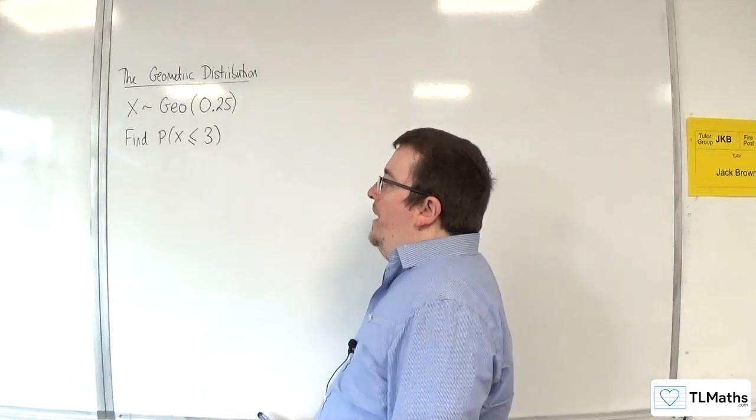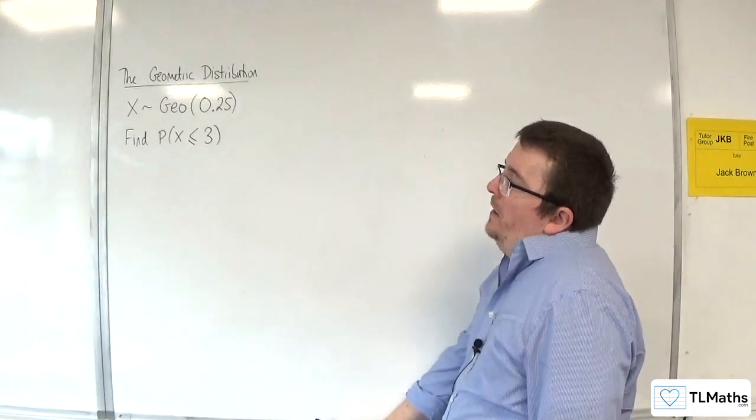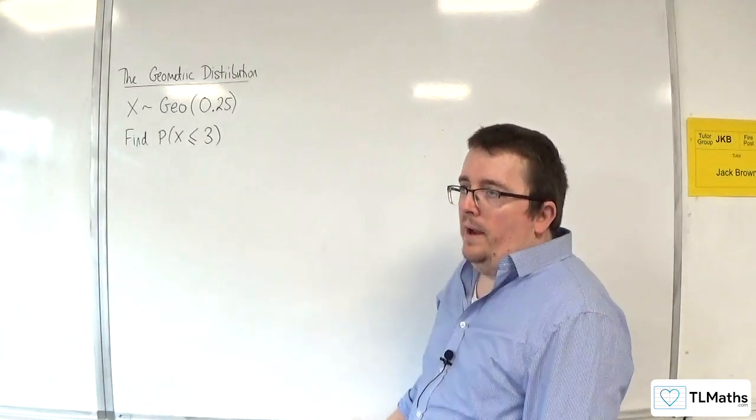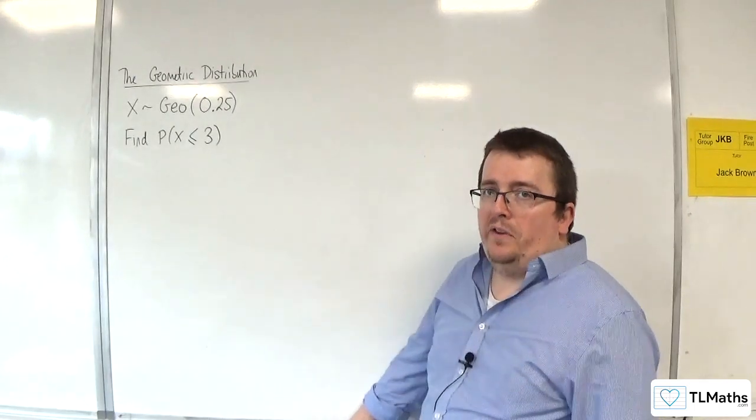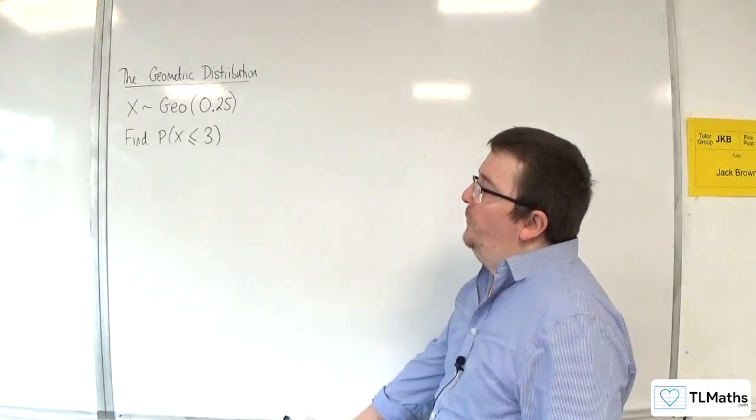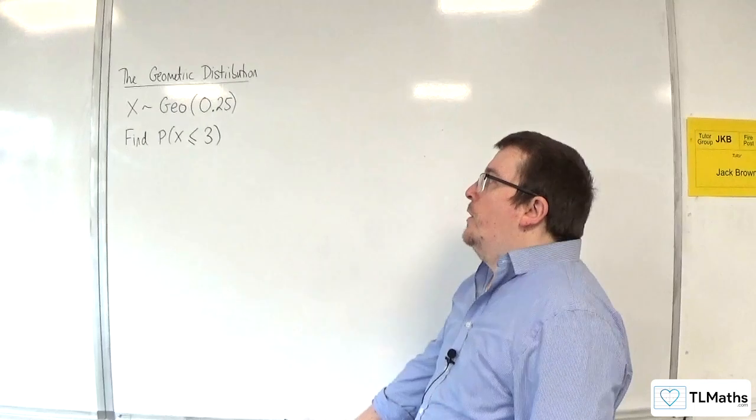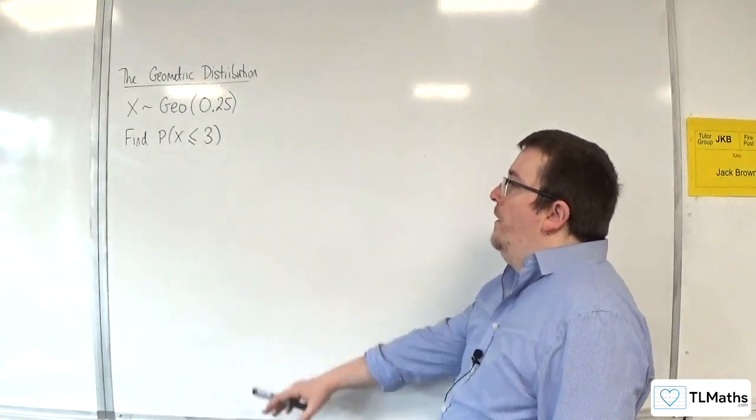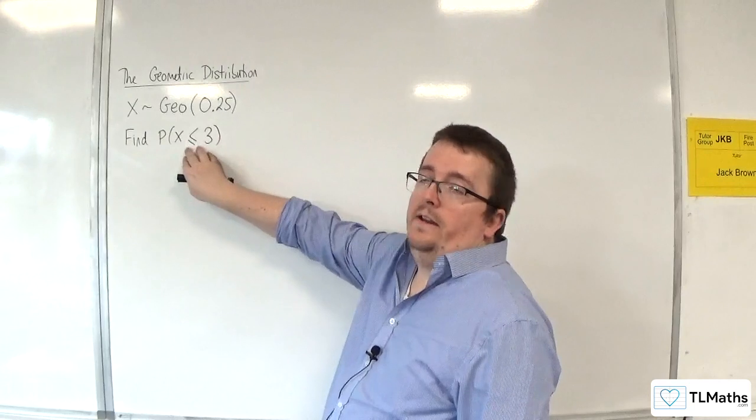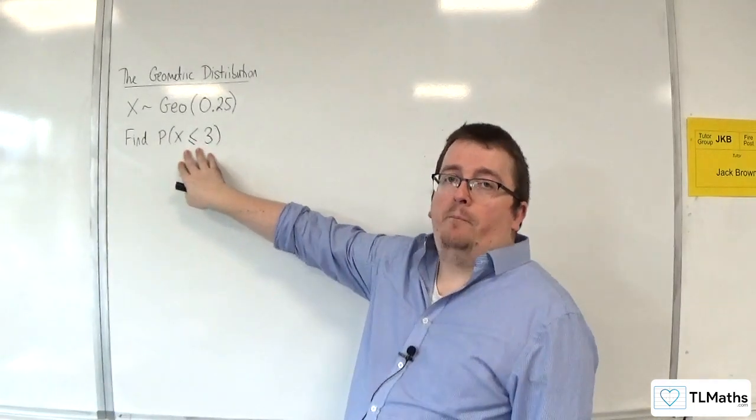Now, what does that mean? So that would mean that if I was playing a game and the probability of success was 0.25, I would be looking at the probability that I win the game within the first three attempts.